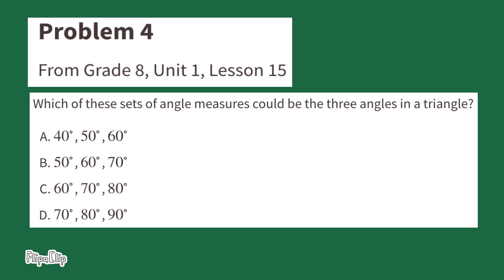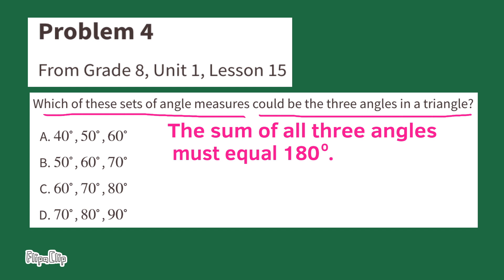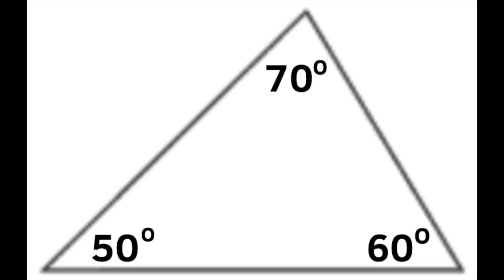Number 4, from 8th grade Unit 1 Lesson 15: Which of these sets of angle measures could be the three angles in a triangle? Remember that the sum of all three angles in a triangle must equal 180 degrees. B is the only option that would work: 50 degrees plus 60 degrees plus 70 degrees equals 180 degrees. Those three angle measures could be the three angle measures of a triangle.